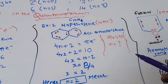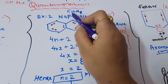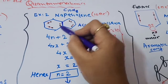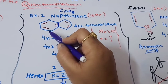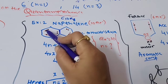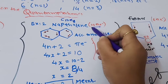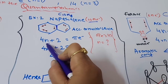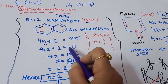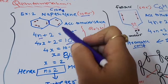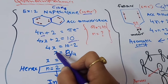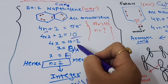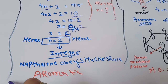The second example is naphthalene, formula C10H8. One bond is common between the two rings. There are 5 double bonds, and each carries 2 electrons, making it a 10 pi electron system. According to Huckel's rule: 4n+2 = 10, so 4n = 8, giving n = 2. Since 2 is an integer, naphthalene also obeys Huckel's rule and is hence an aromatic compound.